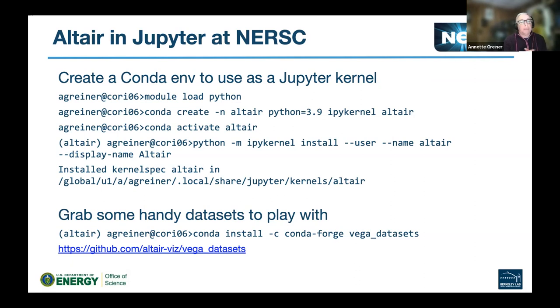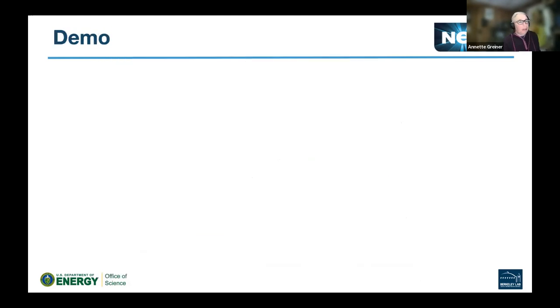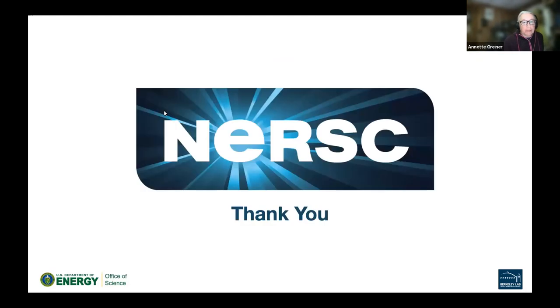Along with that, you may want to grab a thing called Vega Datasets, which is just a collection of data sets that are super easy to pull in and work with, and just kind of nice for having a range of data to play with when you're trying to figure out how to do stuff in Altair. And then once that's done, you end up seeing in JupyterHub, you'll see the Altair option, or whatever you decided to name the kernel that you set up.